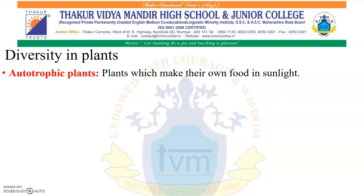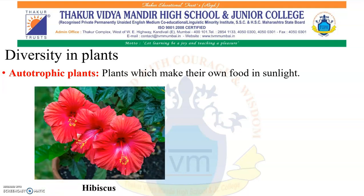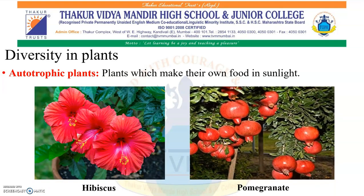Autotrophic plants: Plants which make their own food in sunlight are called autotrophic plants. They make their own food with the help of the process called photosynthesis, which we have already learnt in Chapter 2, The Living World. Examples are hibiscus and pomegranate.